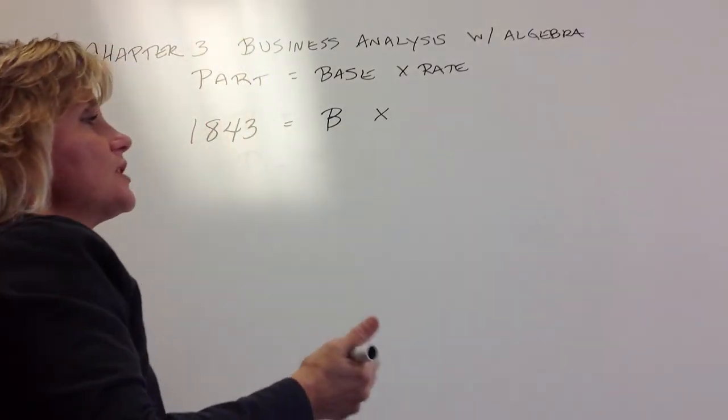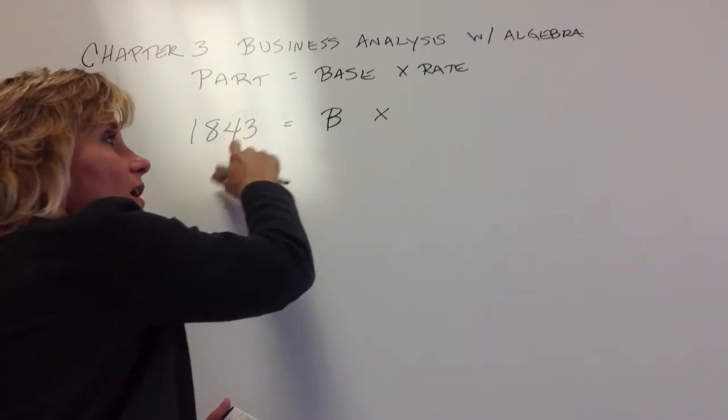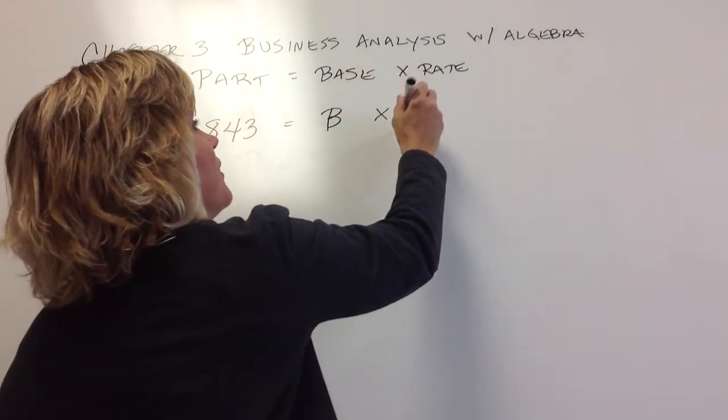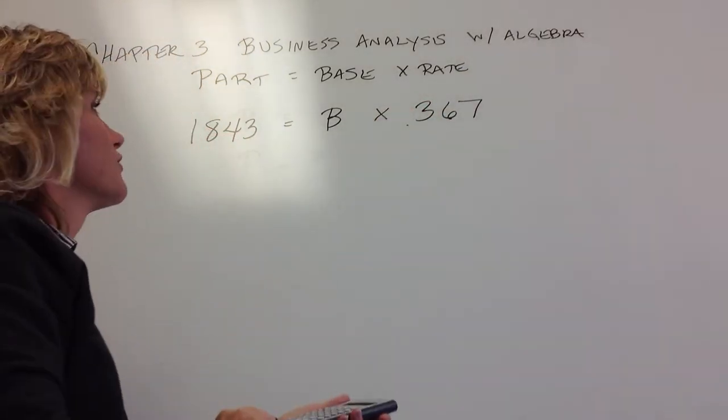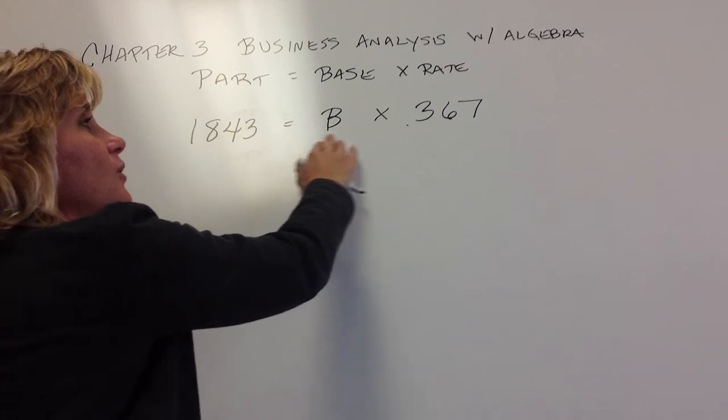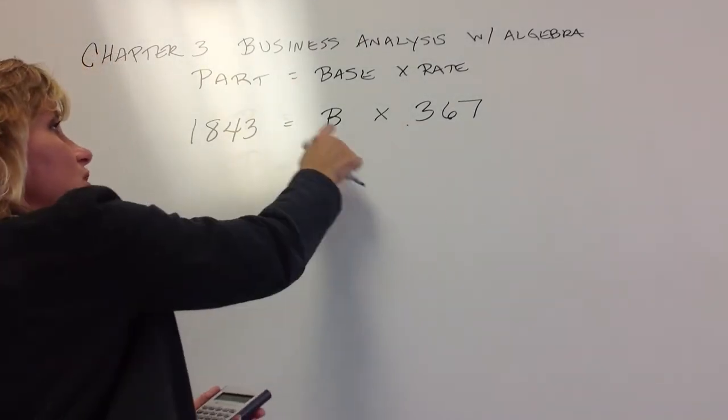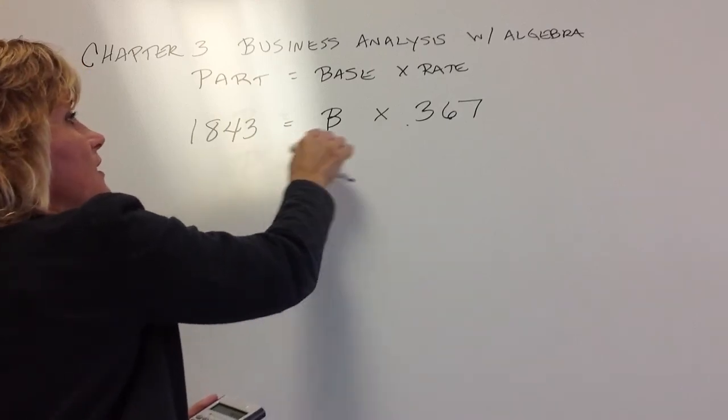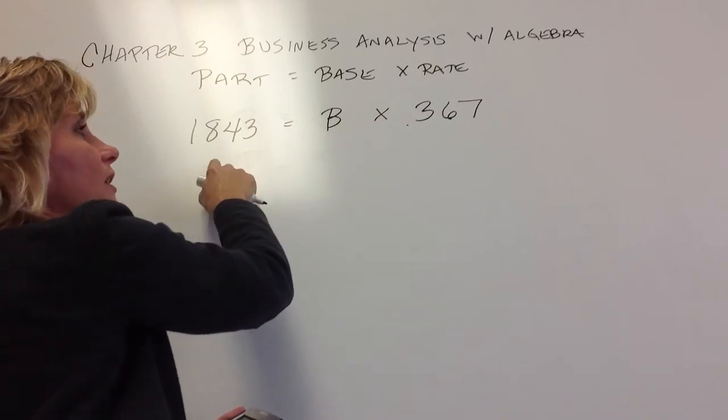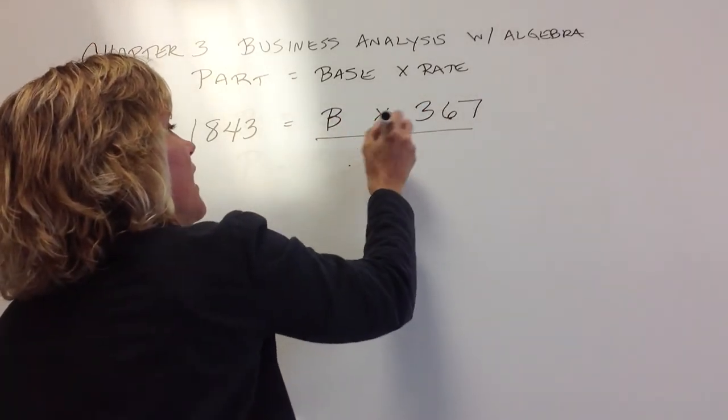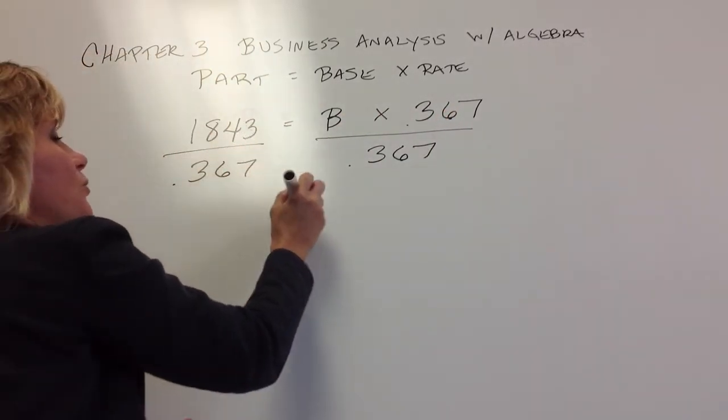And then it tells us 36.7% represent that number of students. So again, we can convert that into a decimal, or you can let your calculator do it. And then I always just leave the formula this way, versus trying to rearrange it to have the B over here. So basically, this is saying that 0.367 times B is equal to 1,843. So I'm just going to divide both sides by that 36.7%.